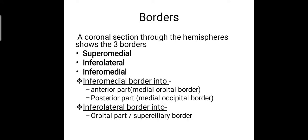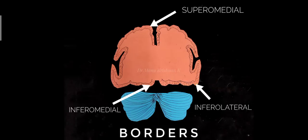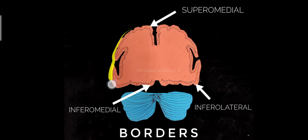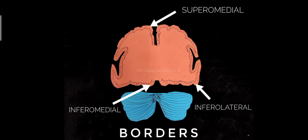Then the borders. If you take a coronal section through the hemispheres, it shows three borders: the superomedial border, the inferolateral border, and the inferomedial border. Here is a representation of the coronal section through the cerebrum where you can clearly see the outer grey matter and the inner white matter. Here you can see the three borders — the upper border is the superomedial border.